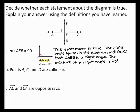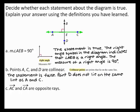In part B, to determine whether points A, C, and D are collinear is true, first locate points A, C, and D on the diagram. By the definition of collinear points, collinear points lie on the same line. From the diagram, points A and C lie on the same line, but point D does not. Therefore, this statement is false.